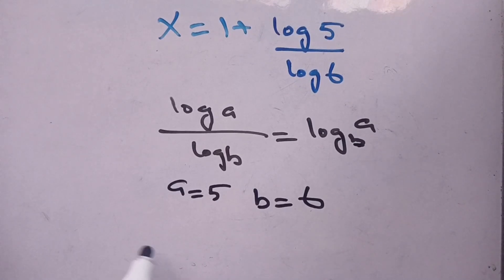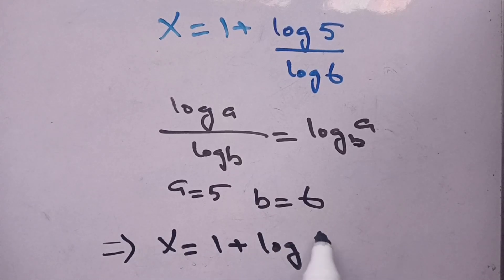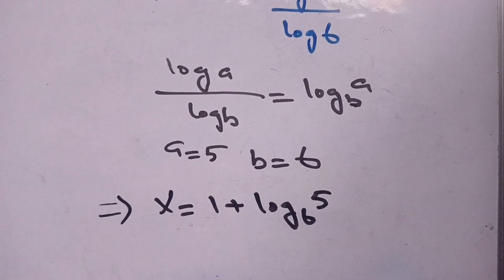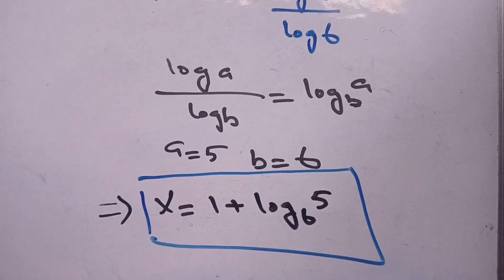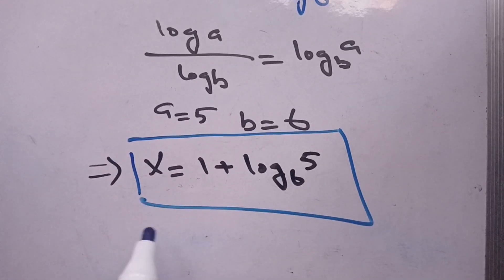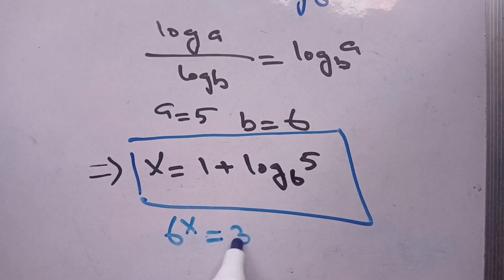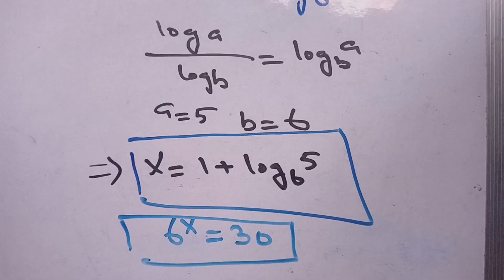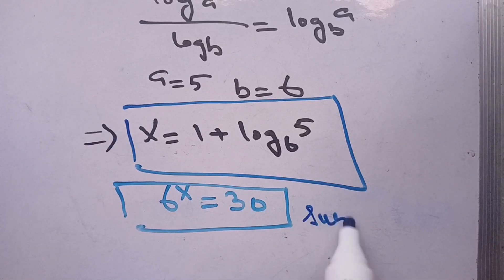On using this identity of logarithm, our value of x is equal to 1 plus log of 5 with base 6, which satisfies our given exponential equation 6 power x is equal to 30. If you are new here, make sure to subscribe to our channel for more informative videos.